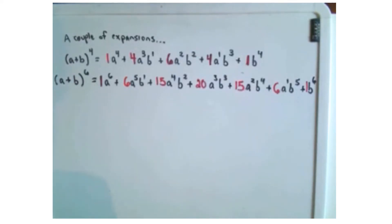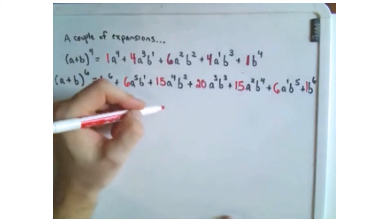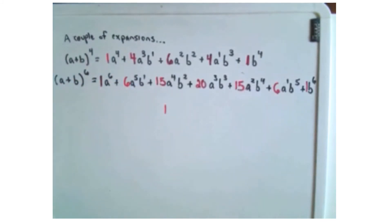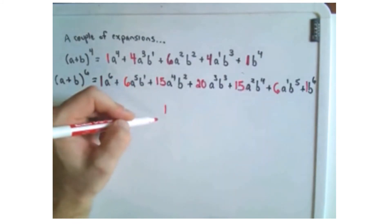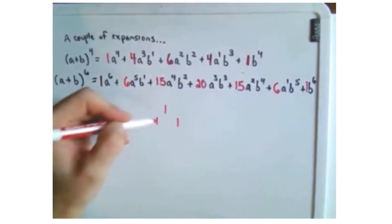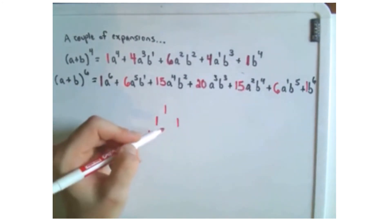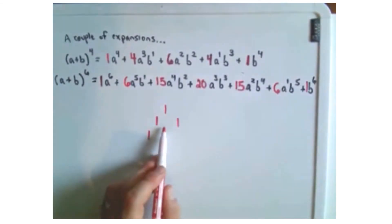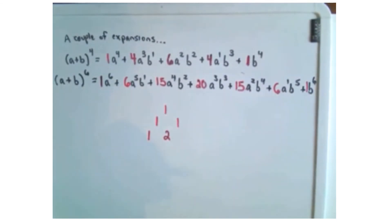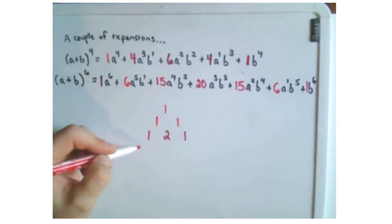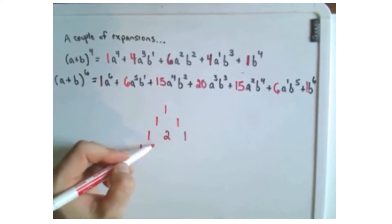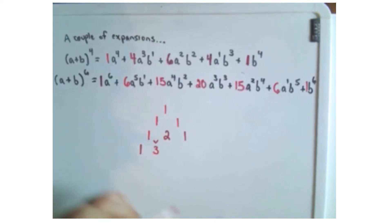Here's Pascal's triangle. You start with just the number 1. Then you make 1s to the left and right below it. Next, add 1 and 1 to get 2 in the middle, with 1s on the sides. Continuing: 1 and 2 gives 3, and 2 and 1 gives another 3, with a 1 on the end.